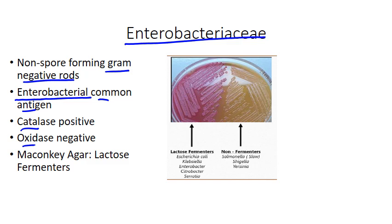Biochemically, they also share some other features. They're all catalase positive and oxidase negative. One of the ways you can begin to differentiate them is by looking at MacConkey agar. Some of the Enterobacteriaceae are lactose fermenters and some are not. When you have lactose fermentation, you're going to see a red or pink color. The one to be cautious about is Serratia — it is capable of lactose fermentation, but it does it really, really slowly.